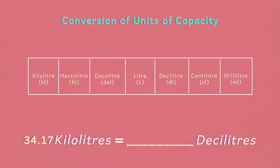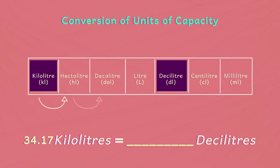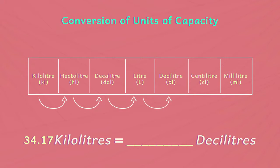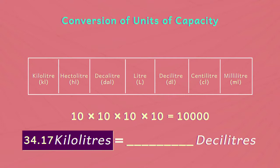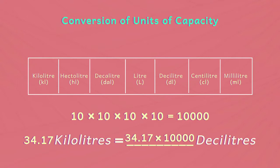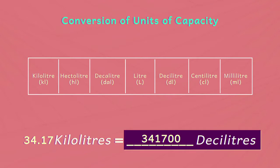Convert 34.17 kilolitres to decilitres. Decilitre is four steps to the right of kilolitre, so we multiply by ten at each of the four steps: 10 × 10 × 10 × 10 = 10,000. Therefore, 34.17 kilolitres equals 34.17 × 10,000 = 3,41,700 decilitres.